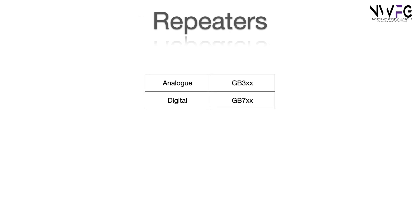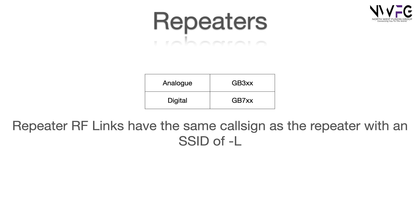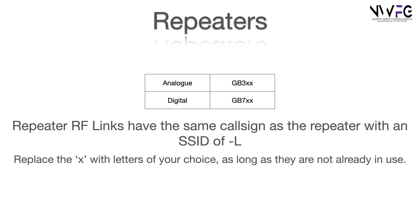Repeaters come in two flavours: either analogue or digital. Analogue repeaters start GB3 and digital repeaters start GB7. Repeater RF links have the same callsign as the repeater, with an SSID of minus L. So for example, GB3XX might have a repeater RF link of GB3XX minus L. You can replace the X's at the end of the callsign with the letters of your choice, as long as they're not already in use. Repeaters can be kept by full licensees only.